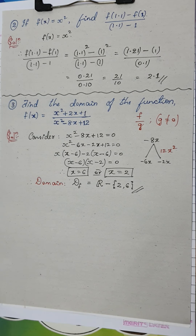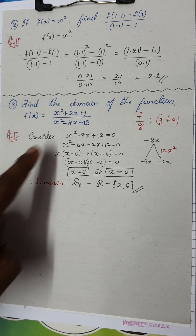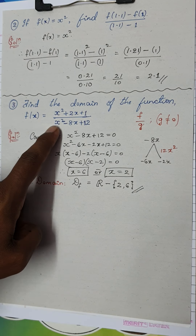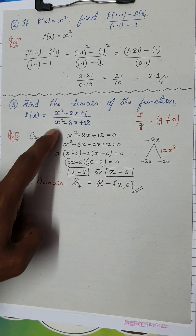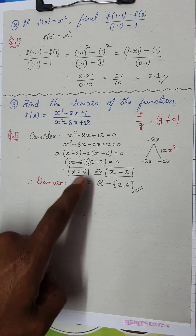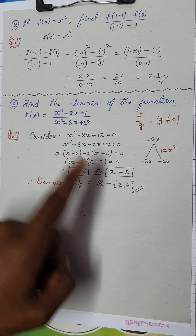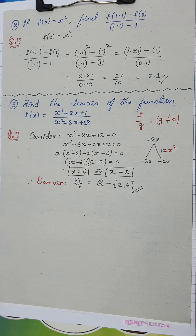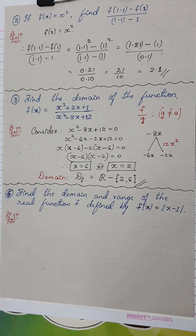The domain of f is given by D(f) = ℝ \ {2, 6}. For any similar rational function, just set the denominator equal to zero, find those values, and remove them from the real numbers to get the domain.